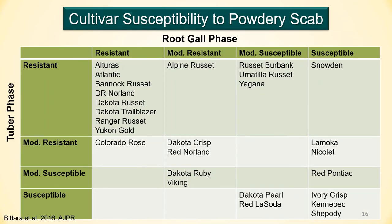Powdery scab produces tuber pustules and root galls. On this table, tuber reaction is on the left-hand side — resistance at the top and susceptible as you move down. Root gall reaction is across the top. The russet skin cultivars in the top left are generally more resistant to both the formation of tuber pustules and root galls. Moving diagonally right and down, susceptibility increases, where Ivory Crisp, Kennebec, and Shepody are susceptible.